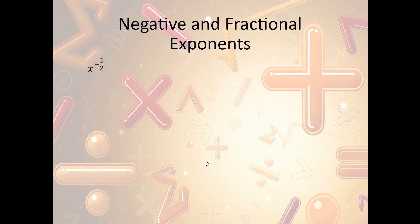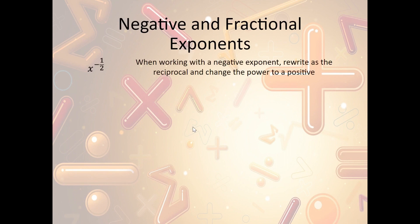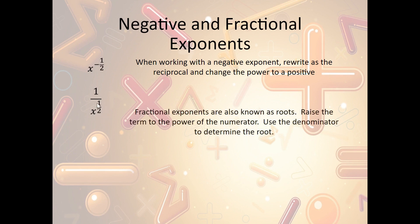Now what if we have a negative and a fractional exponent? We do the same thing — we flip it and make it positive. So x to the negative one-half becomes 1 over x to the one-half power. We know the one-half power means x to the first under a square root, so that becomes 1 over the square root of x.